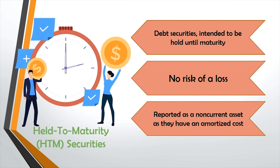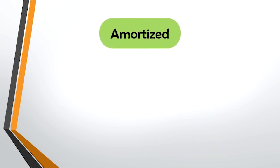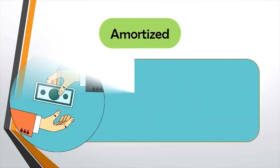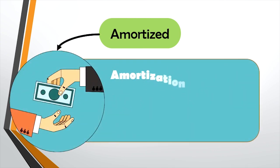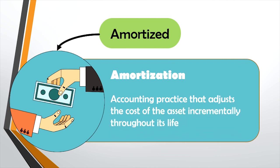Held to maturity securities are typically reported as a non-current asset, as they have an amortized cost on a company's financial statements. Amortization is an accounting practice that adjusts the cost of the asset incrementally throughout its life.